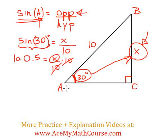Look at that, the 10s disappear. So 10 times 0.5 is 5, and that is equal to x. We have found x. That's it.